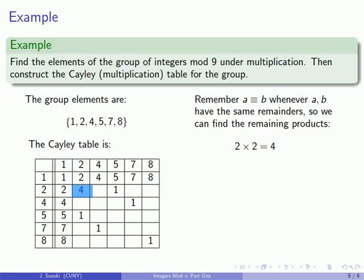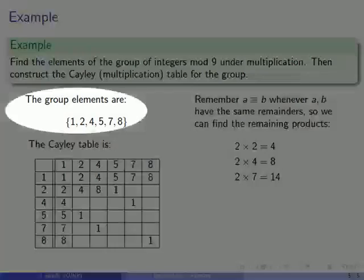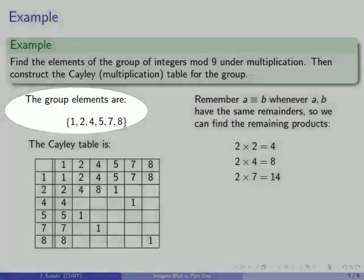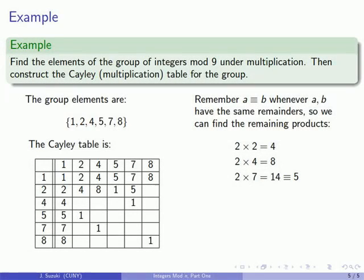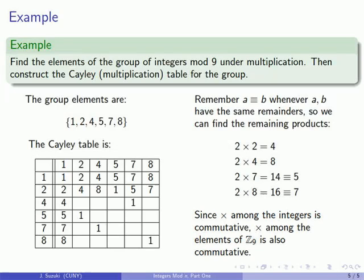So 2 times 2 is 4, 2 times 4 is 8, 2 times 7 is 14 but 14 is not a group element but it is congruent to 5. So 2 times 7 is 5, 2 times 8 is 16 which is congruent to 7 so 2 times 8 is equal to 7. Now remember the times here is the multiplication of integers and integer multiplication is commutative. So at the same time that we have 2 times 2, 2 times 4, 2 times 7, 2 times 8 we also have 4 times 2, 7 times 2 and 8 times 2 so we can fill in those as well.